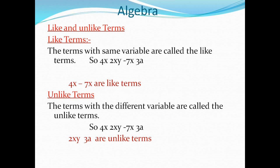Fifth, what are like and unlike terms? Like terms are terms that have the same variable. For example, in 4x, 2xy, −7x, 3a — the like terms are 4x and −7x, because both have the variable x. Unlike terms are terms with different variables. For example, 2xy and 3a are unlike terms, because xy and a are different variables.